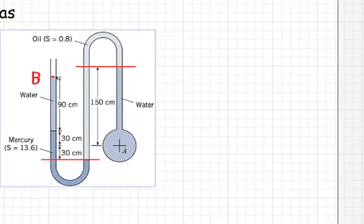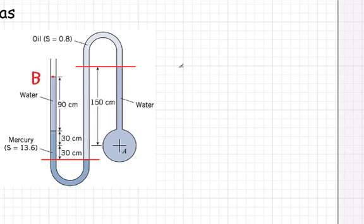Let's write the equation. We start at point B, so we say the pressure at B. Then we're going to add on the pressure corresponding to this water column. So that's gamma water times 0.9 meters, the specific weight of water. Now we're going to add on the pressure corresponding to this mercury column. So we have 0.6 meters times the specific weight of mercury.